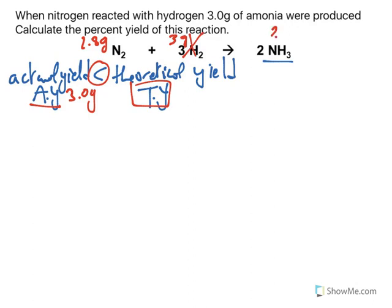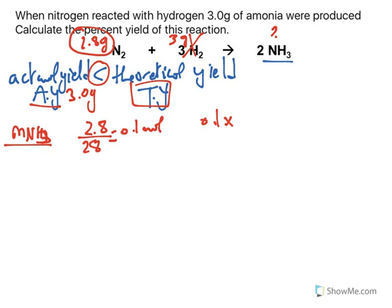Therefore, the mass of ammonia that is going to be formed theoretically: First, 2.80 grams must be divided by 28, the molar mass of nitrogen, which is 0.1 mole. Then 0.1 will be multiplied by the mole ratio between nitrogen and ammonia, which is 2 over 1.